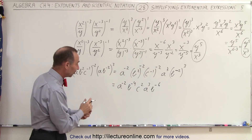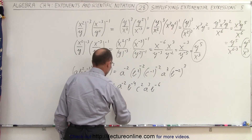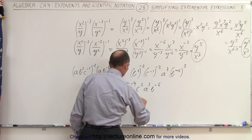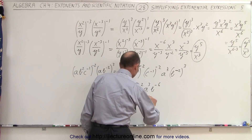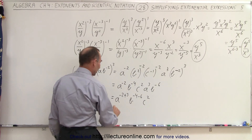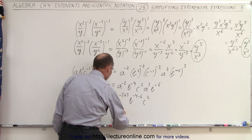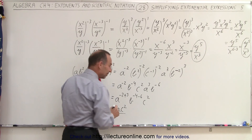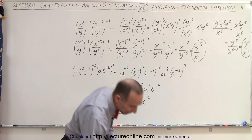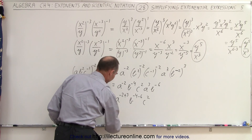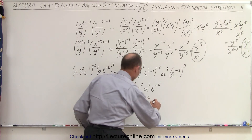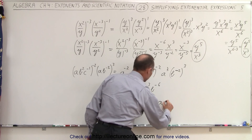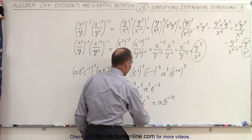When we multiply and the bases are the same, we add exponents. So this becomes a to the minus 2 plus 3, b to the minus 4 minus 6, and c squared. Let me add that all up. So we have a to the positive 1 power, b to the negative 10 power, and c to the second power.